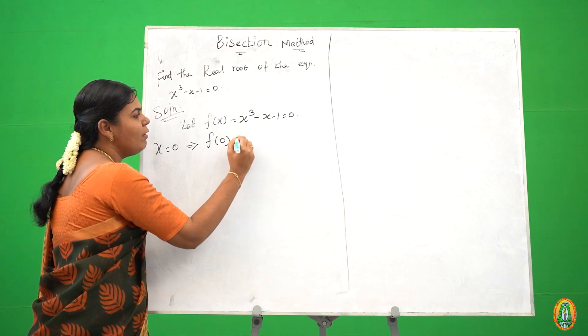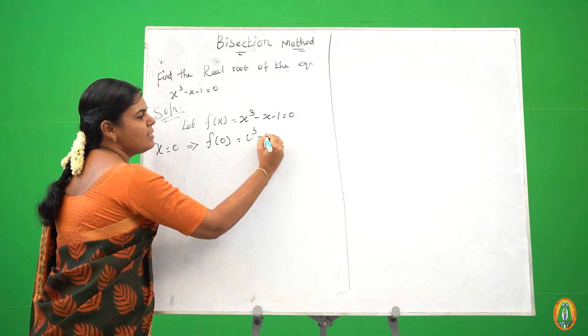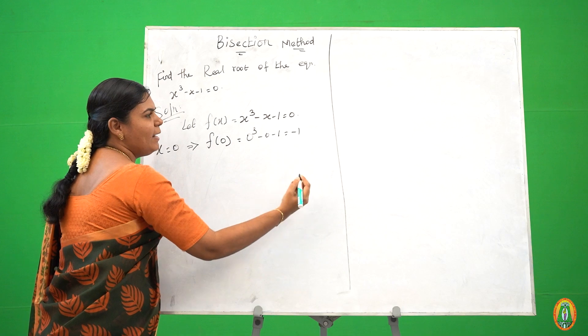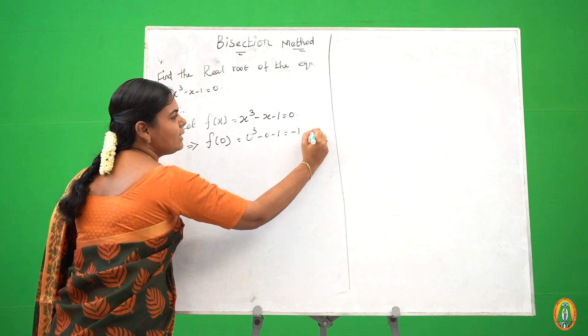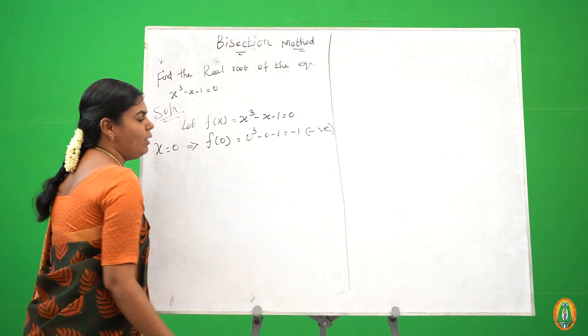So f of 0, 0 cube minus 0 minus 1, equals minus 1. We got a negative value.